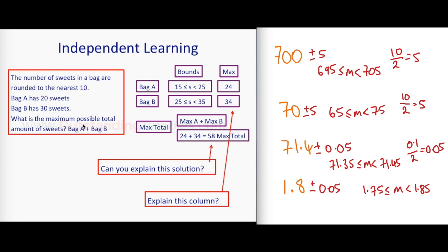What is the maximum possible total amount of sweets, bag A plus bag B? If you think well it's 20 plus 30 is 50, that's not true because look at the working out.